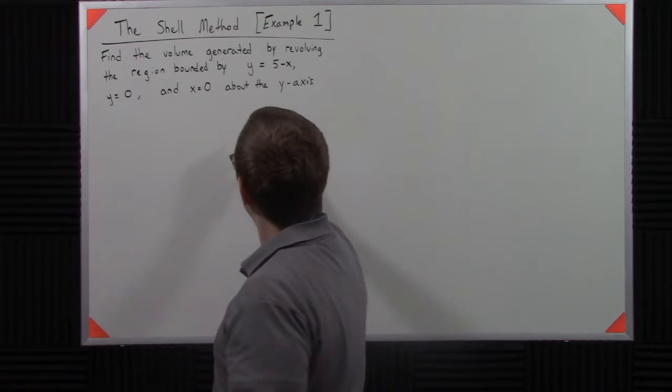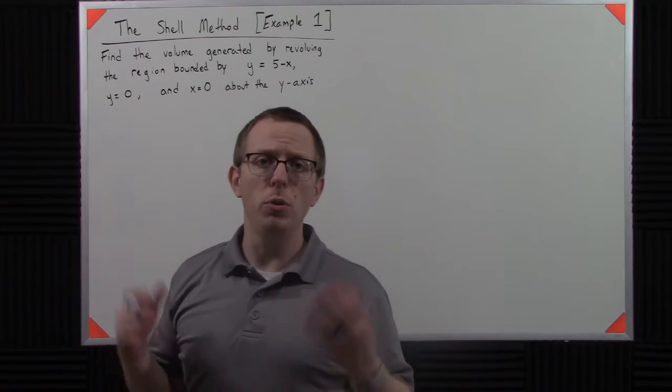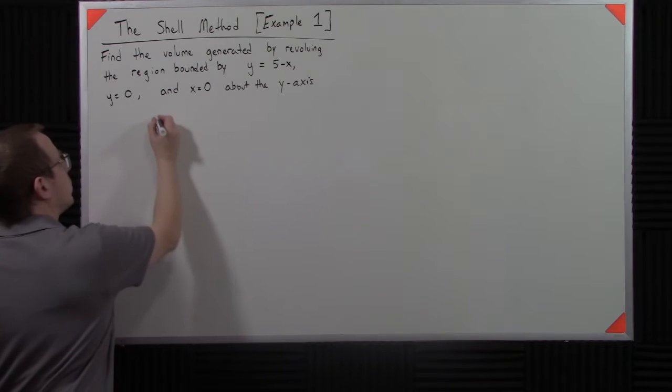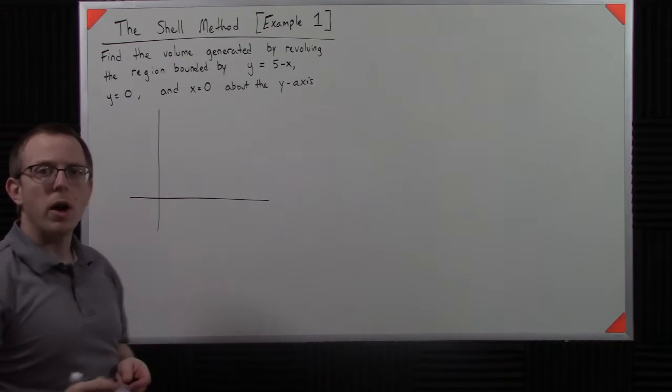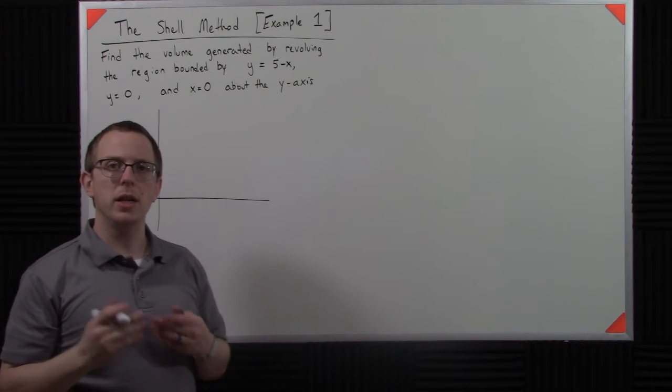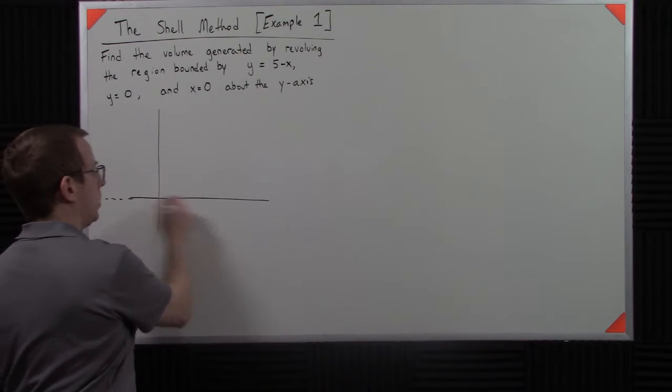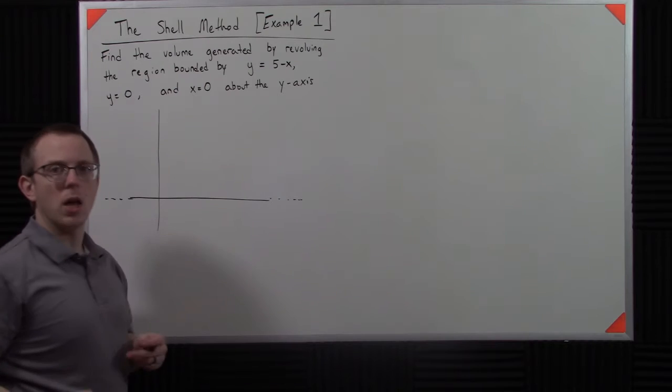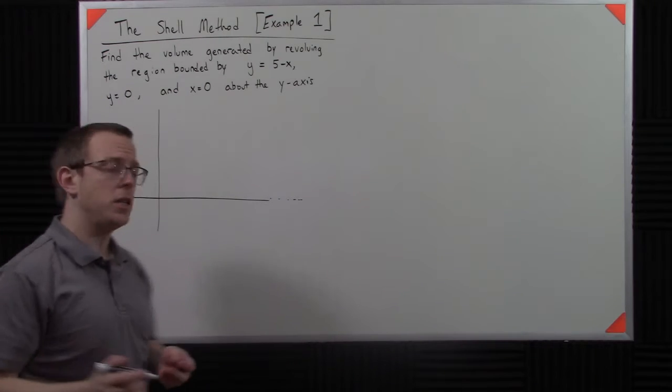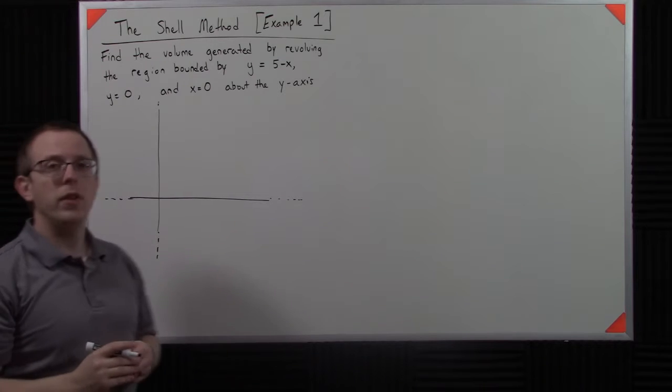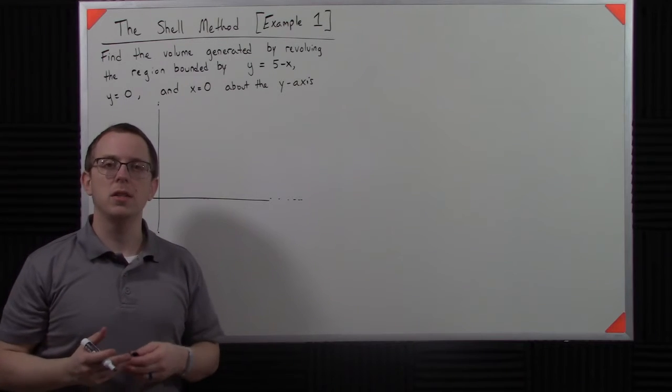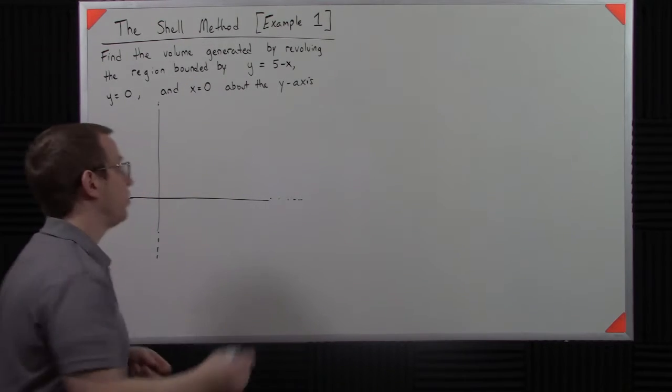So to do this problem, the first thing we need to do is construct it. Let's go here, here. So I know that one of my bounding lines is y equals 0, so that's the horizontal line. One of the other bounding lines is x equals 0. That's a vertical line. And then of course y equals 5 minus x. So notice that the y-intercept there is 5.